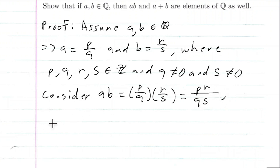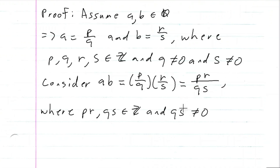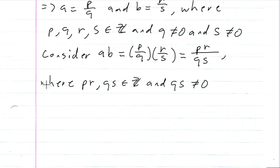So where PR and QS are integers, and QS is not equal to zero. This is the definition of a rational number, which implies that A times B is an element of the rational numbers.